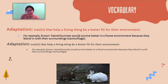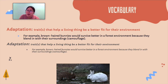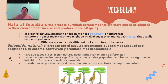The next word is adaptation. An adaptation is a trait that will help a living thing be a better fit for their environment. For example, brown-haired bunnies would survive better in a forest environment because they blend in with their surroundings — they use camouflage. If a hawk came along, it would easily see the white bunny, and the white bunny would be more likely to be hunted than the brown bunny. Over time, through natural selection, species become more and more suited for their environments because animals not well-suited usually die off, while those better suited produce more offspring, and those babies carry on their parents' traits.